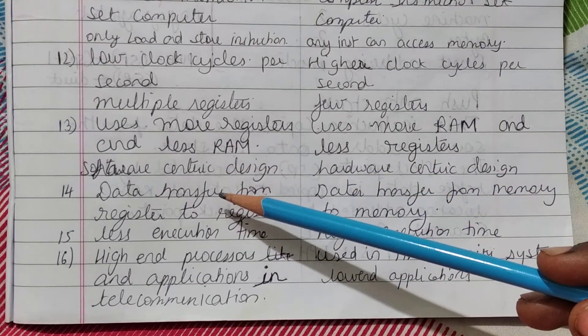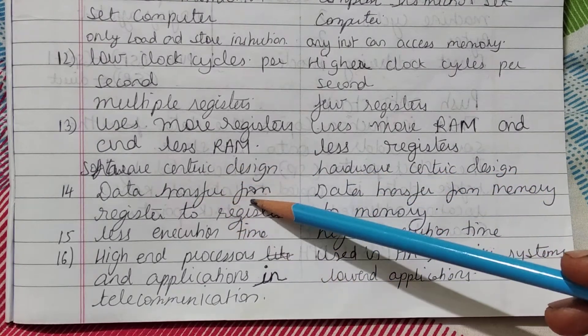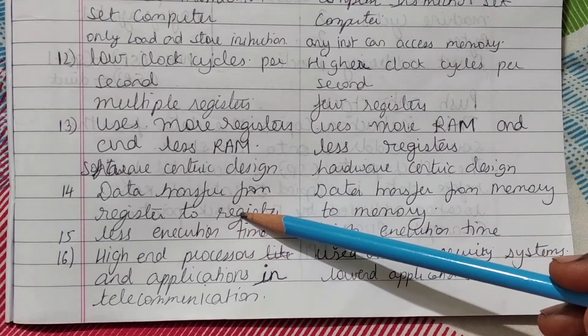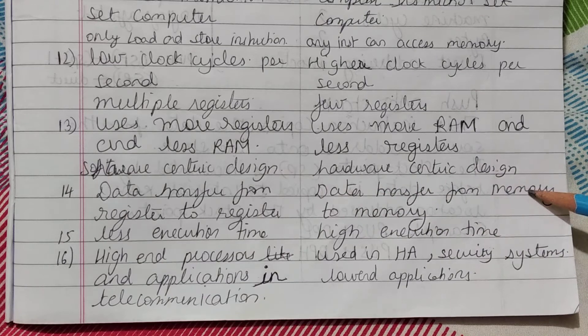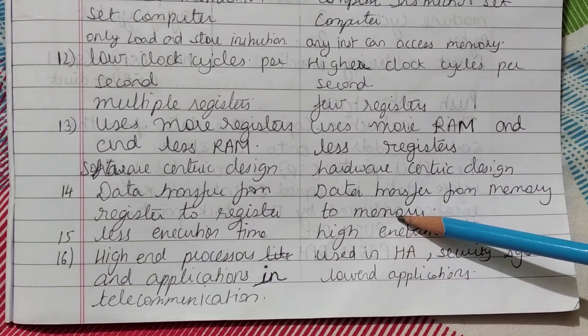For RISC, data transfer occurs from register to register. For CISC, data transfer occurs from memory to memory.